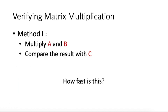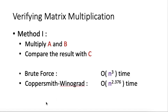One way is to multiply A and B from scratch, and we compare the final result with that of C. This is the brute force method. When we multiply two n-by-n matrices, the resulting matrix will be an n-by-n matrix with n-square entries to compute. For each entry, it can be computed in order n-time. So the brute force method takes n-to-the-power-3 time.